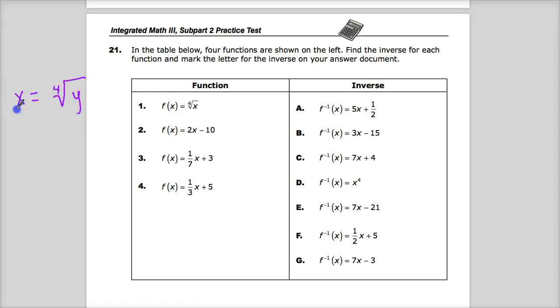This becomes y and this becomes x. It's kind of helpful sometimes to look to see what opposite operations exist. So I need to get rid of the fourth root, so I'm going to raise it to the fourth power. That'll cancel that out - x to the fourth. And then this becomes inverse function notation. So this one goes to D. That's my first one. That was pretty easy.